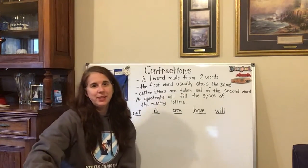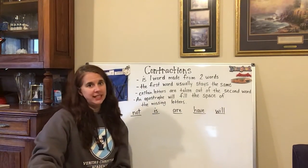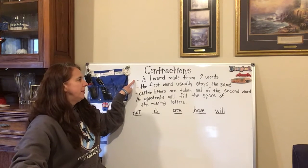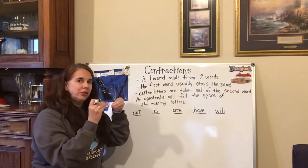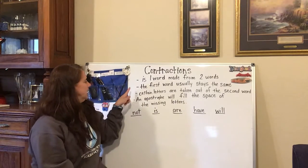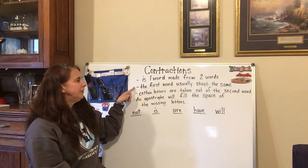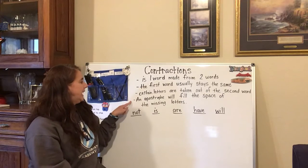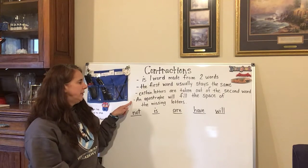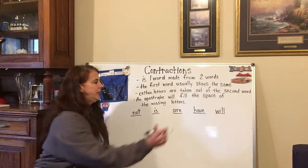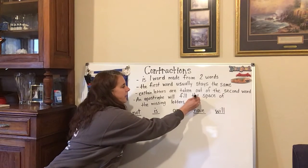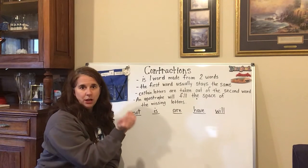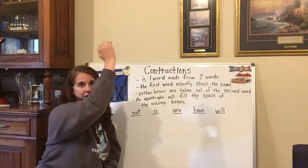In first grade, we are going to learn about contractions. A contraction is one word made from two words. You take two words and smash them together to make one word. The first word usually stays the same. Certain letters are taken out of the second word. An apostrophe will fill the space of the missing letters. An apostrophe is like a little comma but up in the air — that's the difference between an apostrophe and a comma.